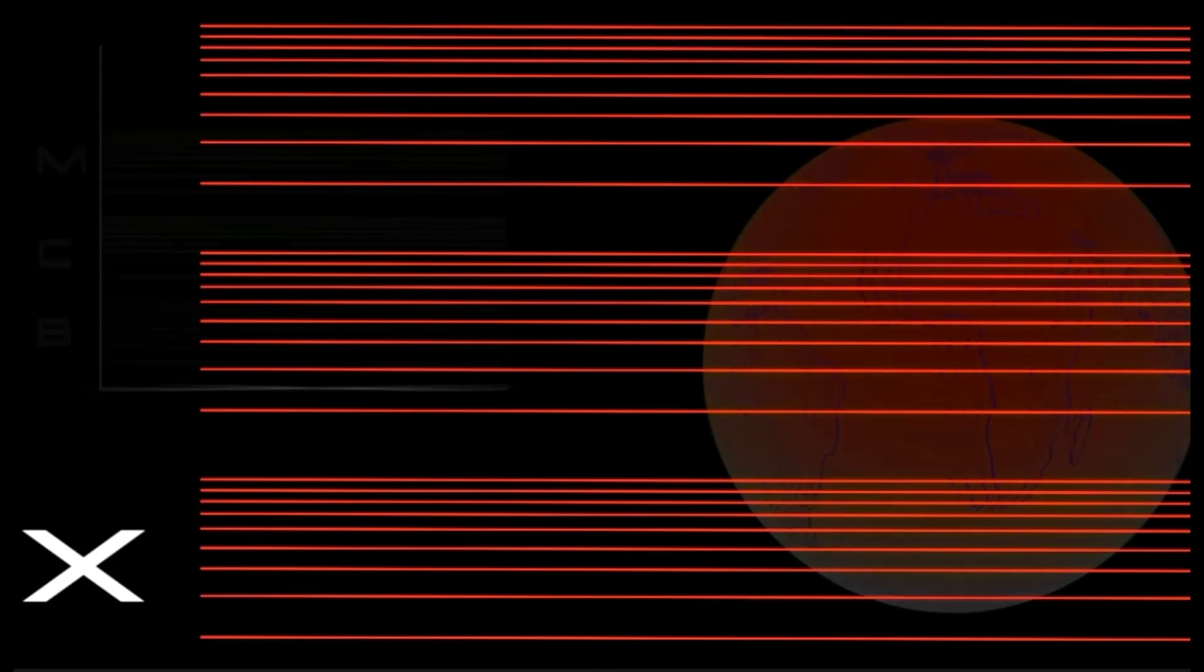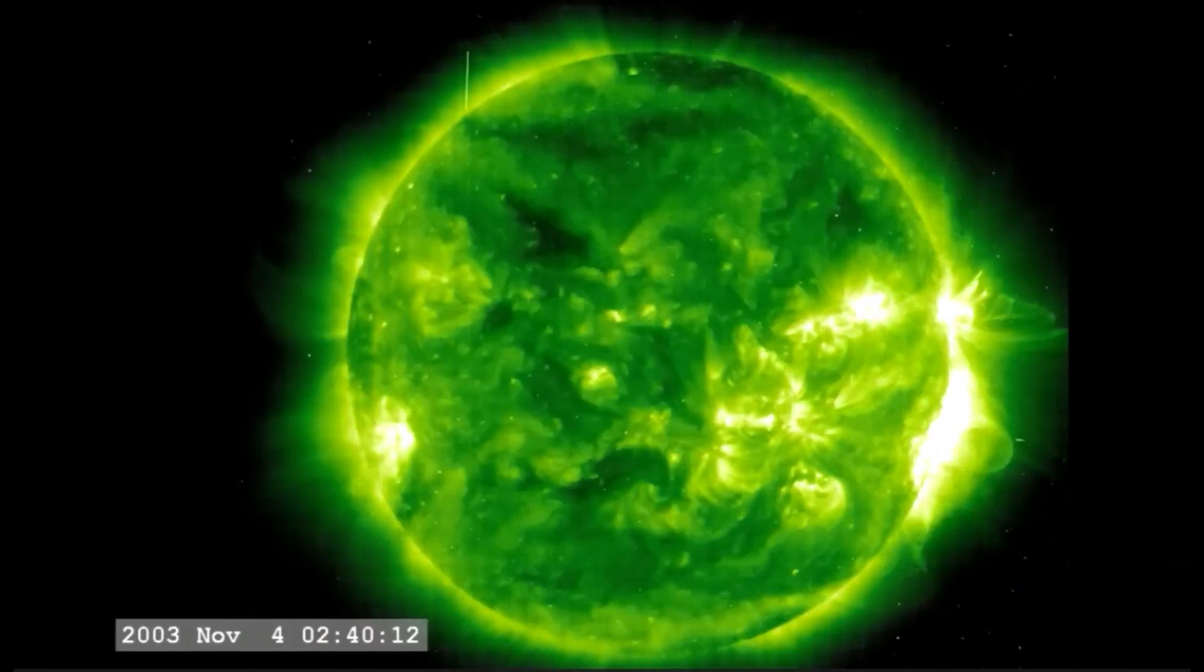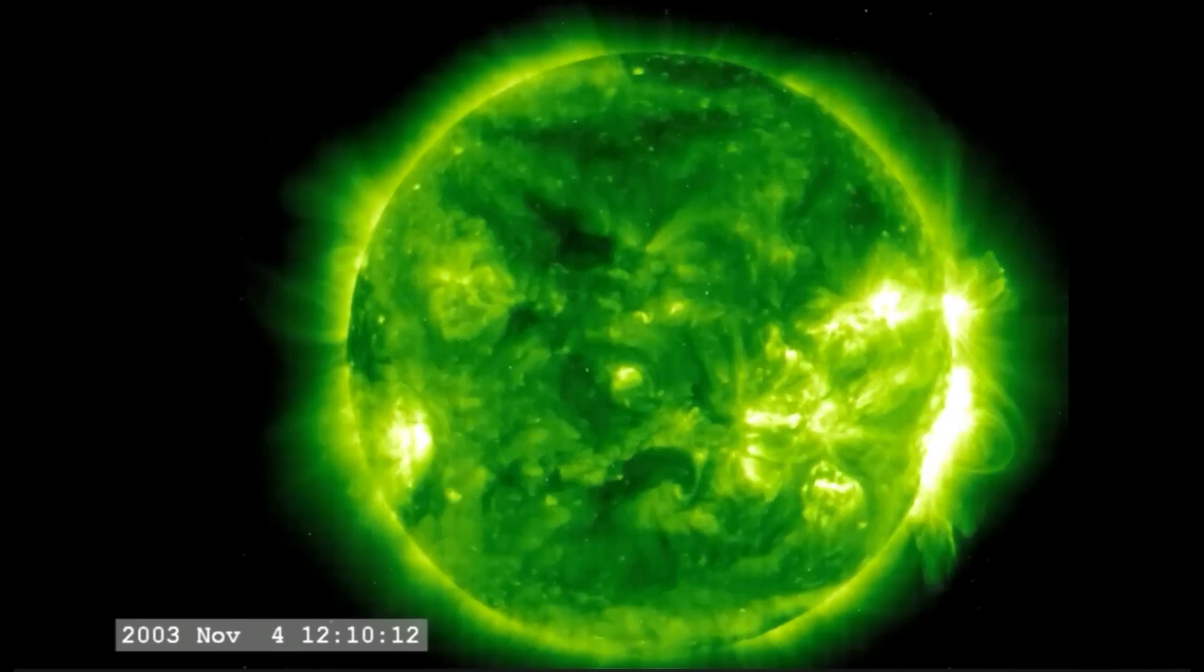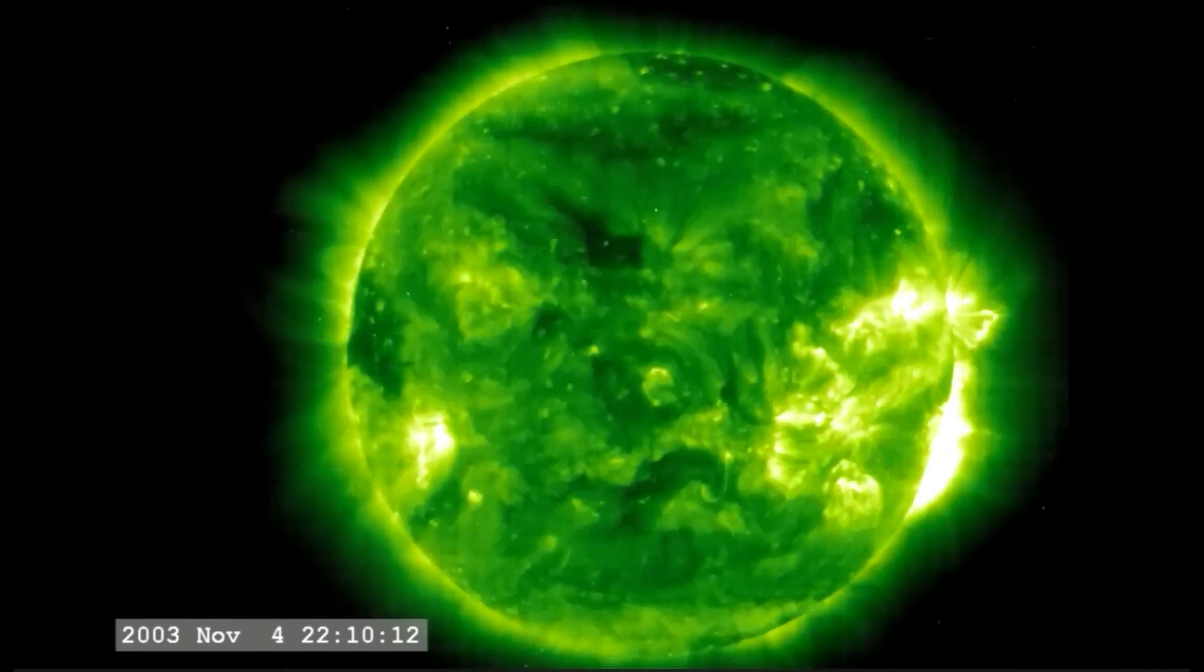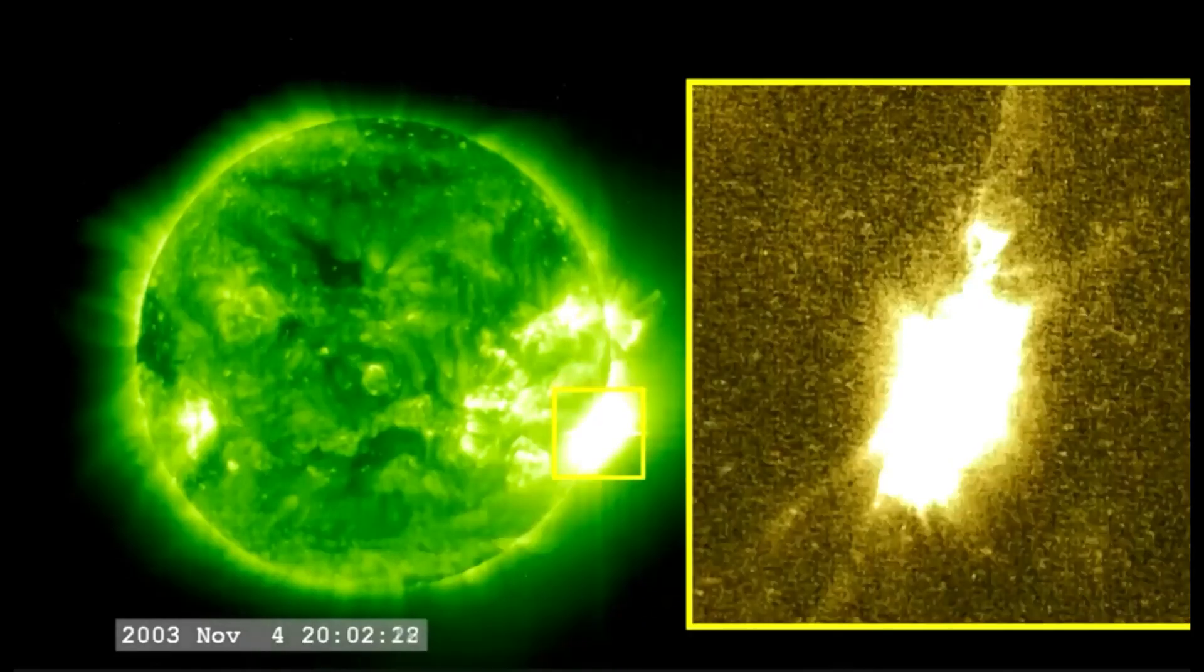The most powerful flare on record was in 2003, 21 years ago during a solar maximum. It was so powerful that it overloaded the sensors measuring it. They cut out at X-17, and the flare was later estimated to be about X-45.